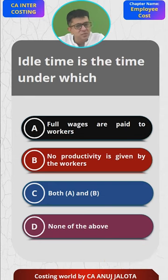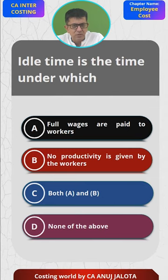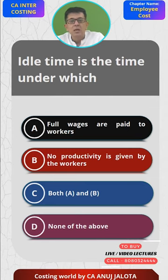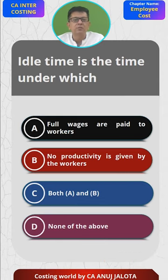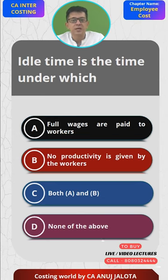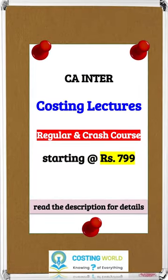Suppose there was a breakdown of machines — workers were working, suddenly the machine stopped functioning. Workers will still be getting paid. So idle time is something for which full wages are paid to the workers, making option A correct. Option B — no production or productivity is given by the workers — is also correct. So out of the four options, C, which is both A and B, makes maximum sense and is the correct answer.